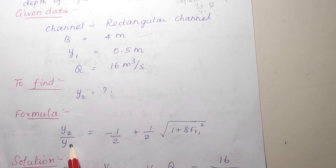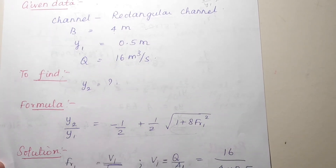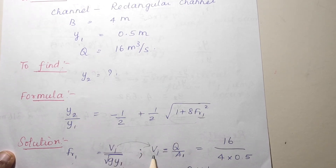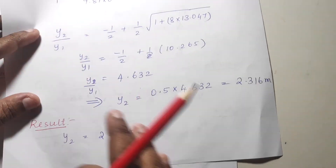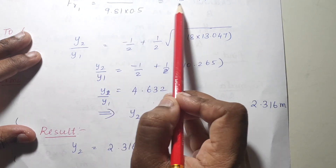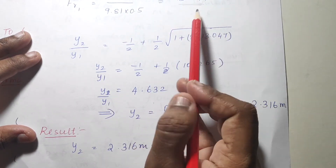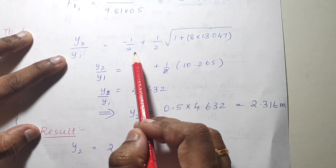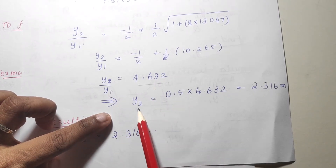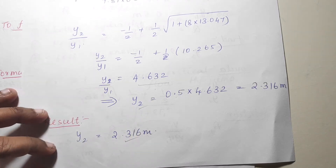The formula is y2 divided by y1 equals a function of the Froude number. The Froude number formula is F1 = v1 divided by the square root of g times y1. To find v1: v1 = q divided by A1. Substitute the values to find the Froude number — the answer comes out to be 13.047. Substitute into the sequent depth equation and find y2.